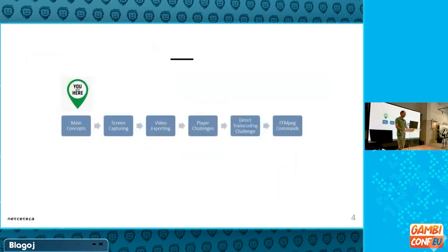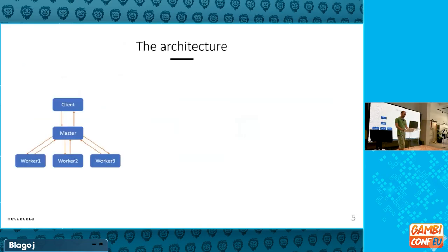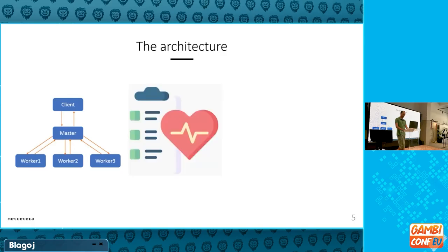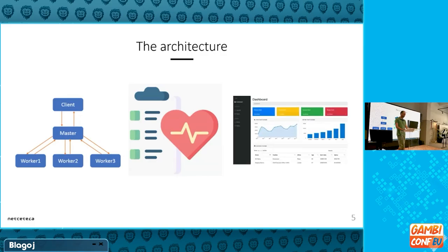Now we can start with the main concept and requirements of the system we were about to develop. First, the architecture — by requirement, someone can upload multiple files. We do not want just one worker and have the system hang, but rather a distributed system with mixed nodes, with one server as the orchestrator. We would also need some kind of a health check in case of node failures, and a dashboard so people can track the progress — how many files are in the pipeline and when transcoding will be done.